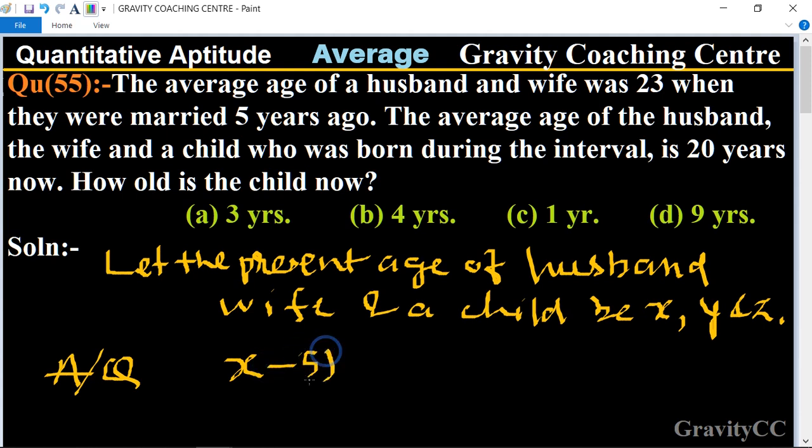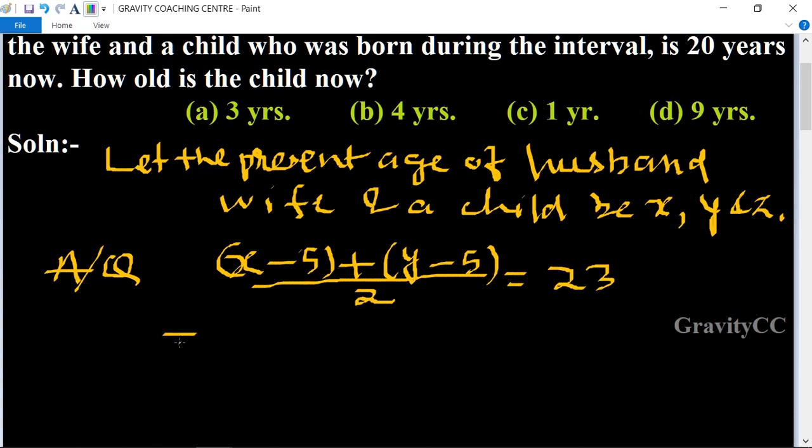So (x - 5) + (y - 5) / 2 = 23. This implies that x + y - 10 = 46, so x + y = 46 + 10.